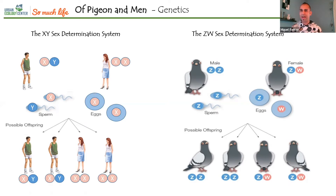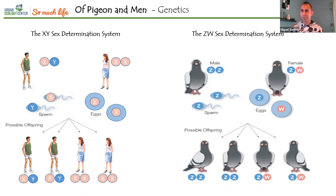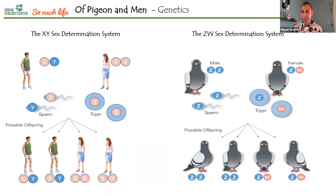In birds, males are the default sex, but the female decides the sex of the offspring. Scientists have wondered why, and I believe it's because of sexual selection. Think of the peacock with that big tail — it's great for attracting females but doesn't help with flying or camouflage. That may be why females in birds, reptiles, and some insects use the ZW system.